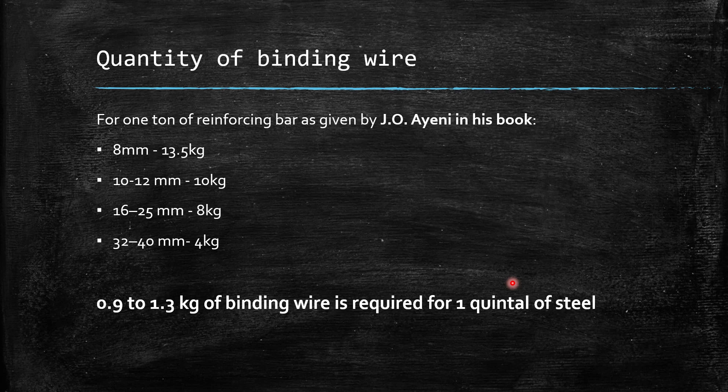Roughly, 0.9 to 1.3 kg of binding wire is required for 1 quintal of steel. 1 quintal means 1 by 10th of the ton. Therefore, we need 9 to 13 kg of binding wire per ton of steel.